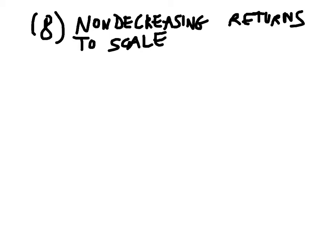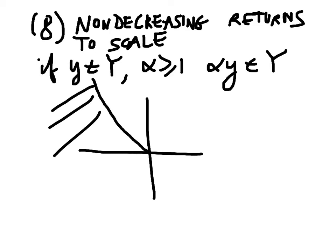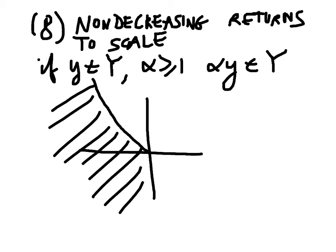Non-decreasing returns to scale is a very similar idea, except now you introduce the possibility of scaling up. So if y is a feasible production plan, you impose the requirement that for alpha greater than or equal to 1, alpha y must also be in the production set. In practice, it might look like a production set that goes up, where even picking y on the efficient frontier, for alpha greater than 1 you can scale up.